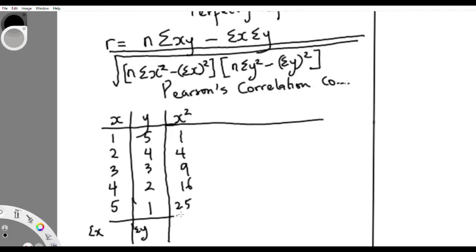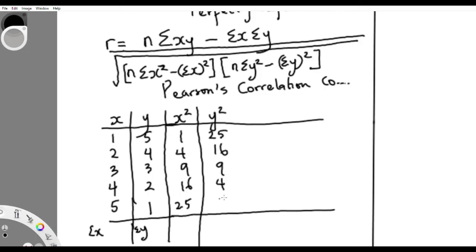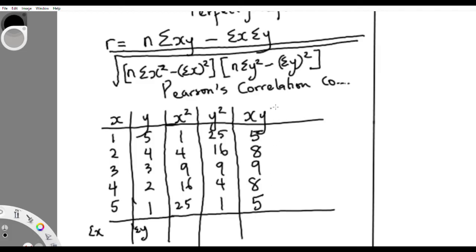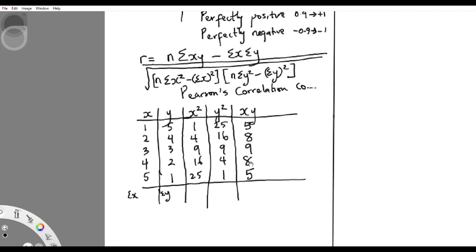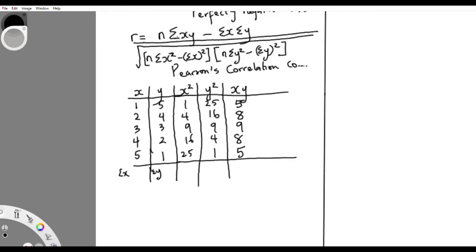You square each X value — getting 9, 16, 25 — and sum those. You also need Y-squared, so you square each Y value — 25, 16, 9, 4, 1 — and sum those as well. The n is just the number of observations: 1, 2, 3, 4, 5 — so n equals five. You also need summation XY, so you multiply each X by its corresponding Y — getting 5, 8, 9, 8, 5 — and sum those.